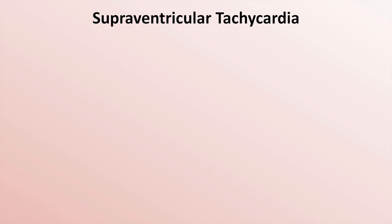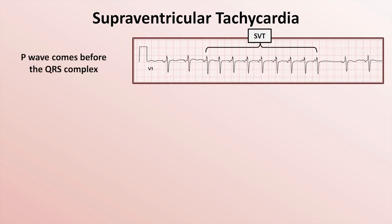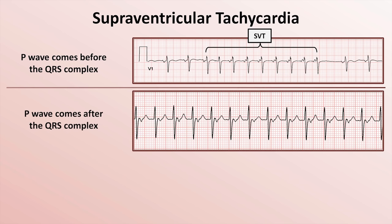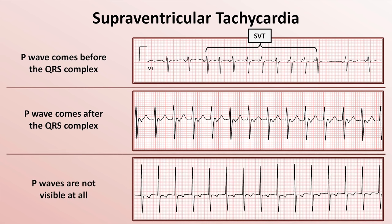Here are three examples of SVT. In the first, there is a short 9-beat run in which the P-wave comes before the QRS, with a morphology differing from normal sinus. In the second example, the P-wave comes after the QRS with an upside-down morphology — if recorded in an inferior lead such as 2, 3, or AVF, these would be called retrograde P-waves, indicating atrial depolarization moving from inferior to superior toward the sinus node. The third example shows P-waves that are not visible at all. The significance of P-wave location during SVT will be discussed in a future video.